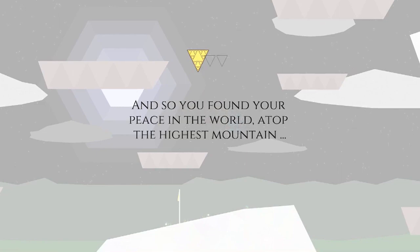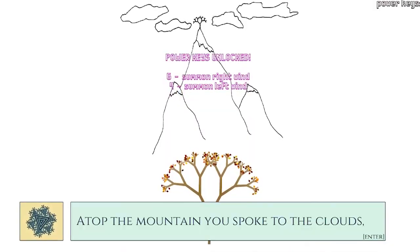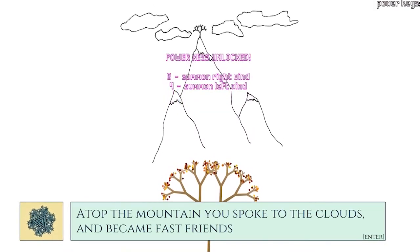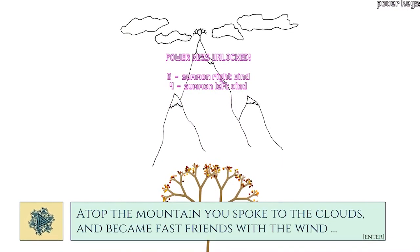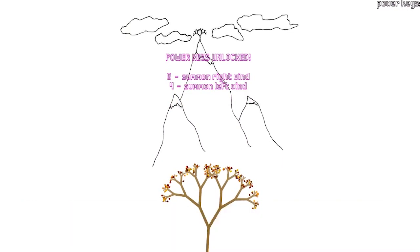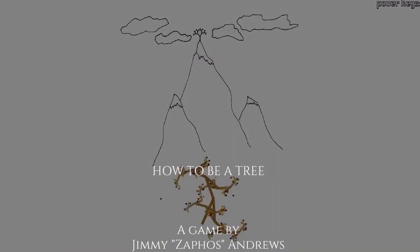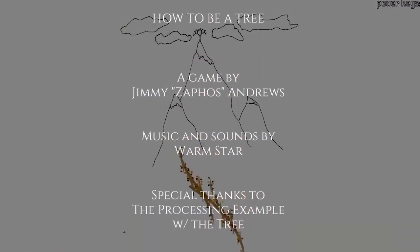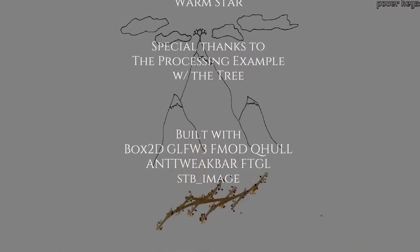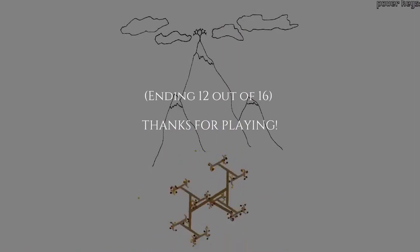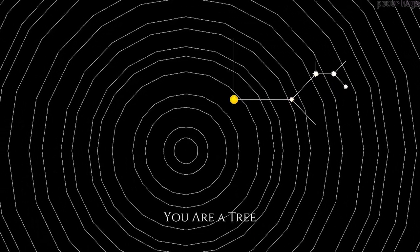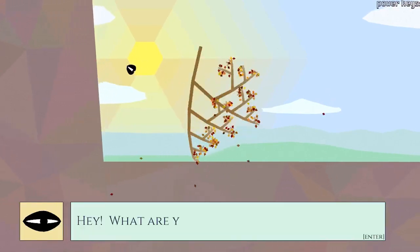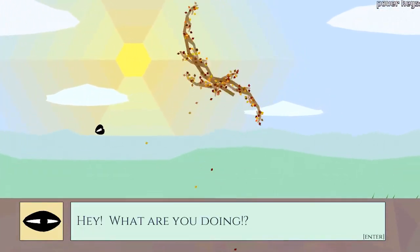And so you found your peace in the world atop the highest mountain. Power keys unlocked. Six summon right wind. Four summon left wind. The mountain you spoke to the clouds, it became fast friends. I have beaten the game. Send me back to the paradise city where the girls are trees and the grass is pretty. Piss off, eye. I got better things to do.